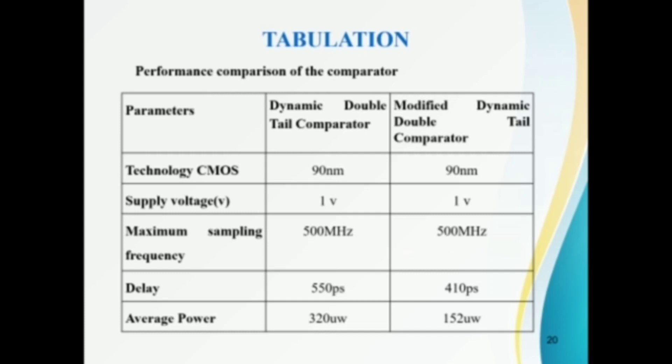And maximum sampling frequency is also the same, 500MHz. And the delay is 550 picoseconds for dynamic double tail comparator and 410 picoseconds for modified dynamic double tail comparator. And the average power is 320 and for modified dynamic double tail comparator, it's 152.